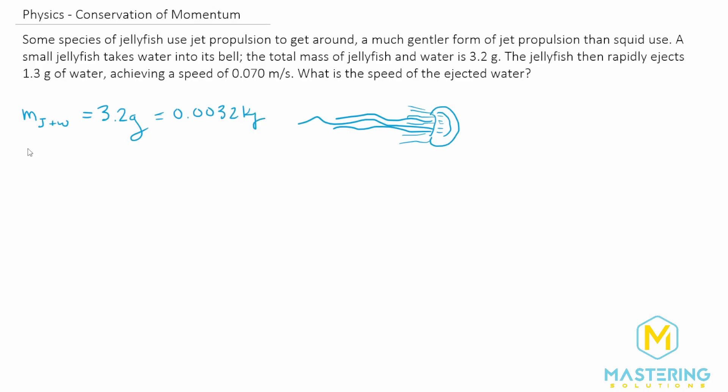And they say that the mass of the water alone is equal to 1.3 grams, which of course is 0.0013 kilograms. Now, we aren't given the mass of the jellyfish directly, but obviously we can just subtract the mass of the water from the mass of the jellyfish and water together. So the mass of the jelly will be 1.9 grams, which is equal to 0.0019 kilograms.